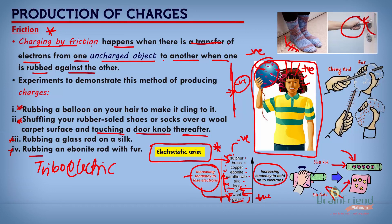Finally, if you rub an ebonite rod with fur, the fur becomes positively charged and the ebonite rod becomes negatively charged. If we look at our electrostatic series, ebonite materials have a tendency to grab or hold onto electrons — and that's what has happened there. Let's go on to learn about another method of producing charge.